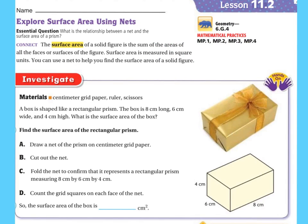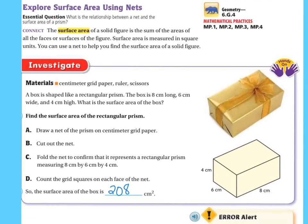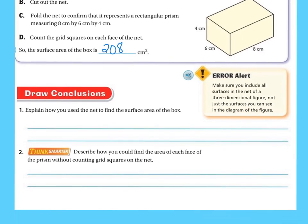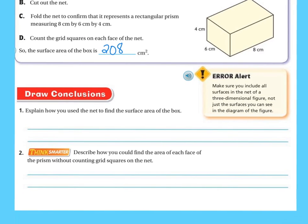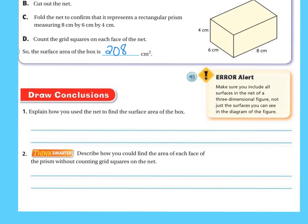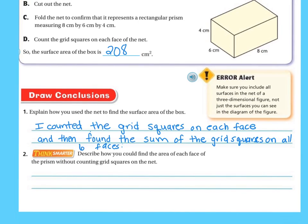The surface area is 208 centimeters squared. To explain how we used a net: I counted the grid squares on each face and then found the sum of the grid squares on all six faces.